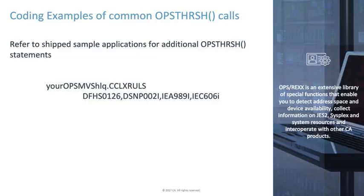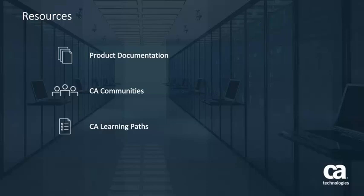Various sample OPS MBS AOF rules can be viewed for more OpsThresh coding examples and provide a syntax template that can be copied as you create your OPS MBS automation. Locate your installation's CCLX OPS MBS data set to access these members. For more detailed information about the OPS MBS OpsThresh function and the complete OPS MBS product, click the information bubble in the top right corner to load the product page, where you can go to the product documentation, visit the CA Communities, or see the learning path.